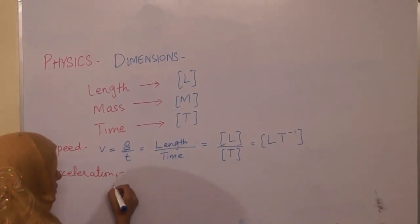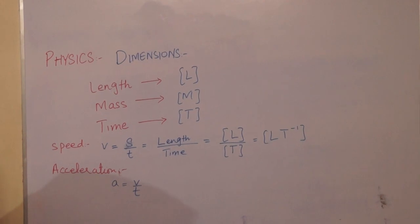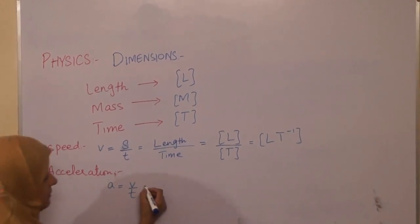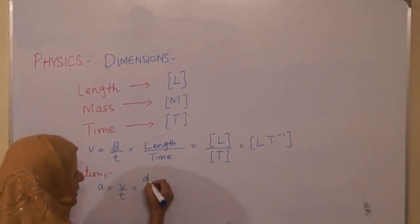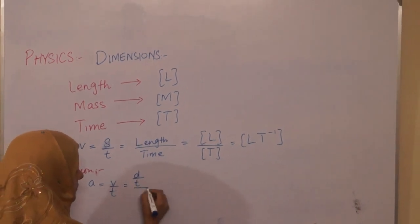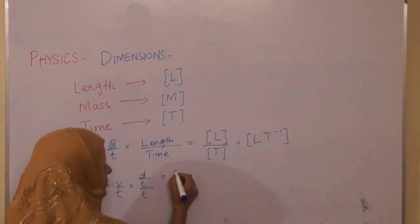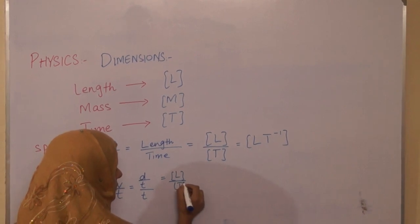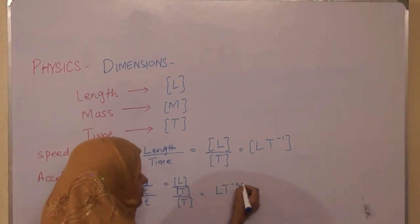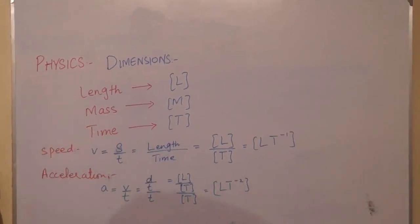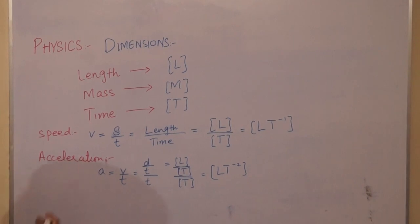If we talk about acceleration, the formula of acceleration is rate of change of velocity. Velocity and speed are somewhat the same; their formula is the same. The only difference is we use distance in speed and displacement in velocity. Same, d over t means L over T, divided by time. So it is LT minus two. LT minus two is the dimension of acceleration.